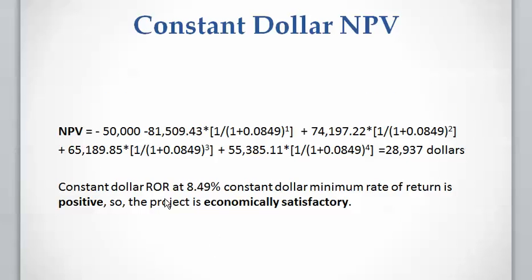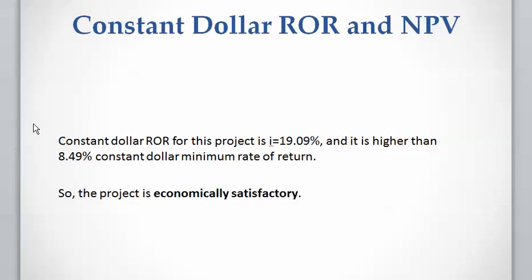Using the constant dollar minimum rate of return of 8.49%, we calculate the NPV of the constant dollar cash flow. Because the NPV is positive, we can conclude the project is economically satisfactory. We also compare the constant dollar rate of return of 19.09% with the constant dollar minimum rate of return of 8.49%. Since the rate of return exceeds the minimum rate of return, we again conclude this project is economically satisfactory.